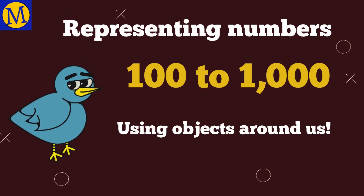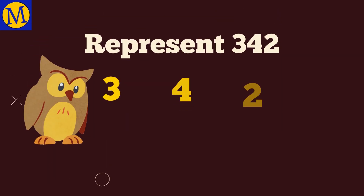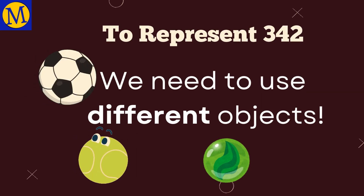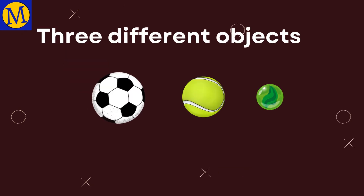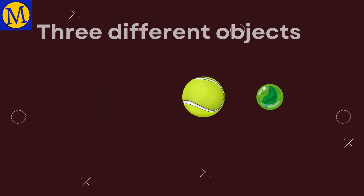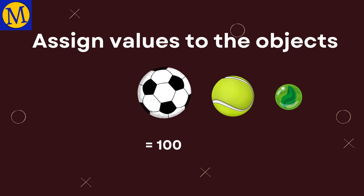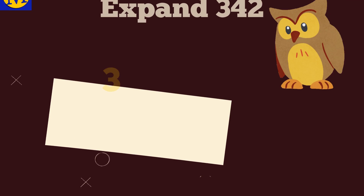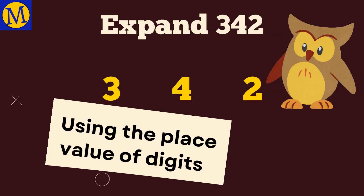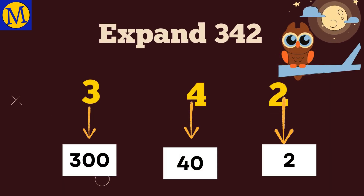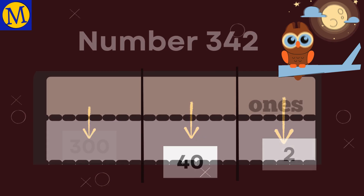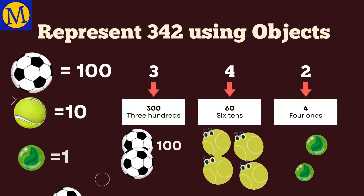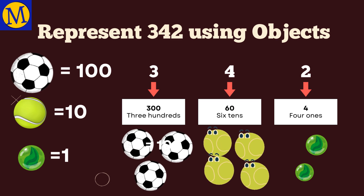Now let's take any number from 100 to 1000 — number 342. We need to use three different objects and assign them values. Let's give the value 100 to the football, 10 to the tennis ball, and 1 to the marble. Using the place value of digits, we expand 342: there are three 100's, four 10's, and two 1's. Here's the number 342 represented using objects.